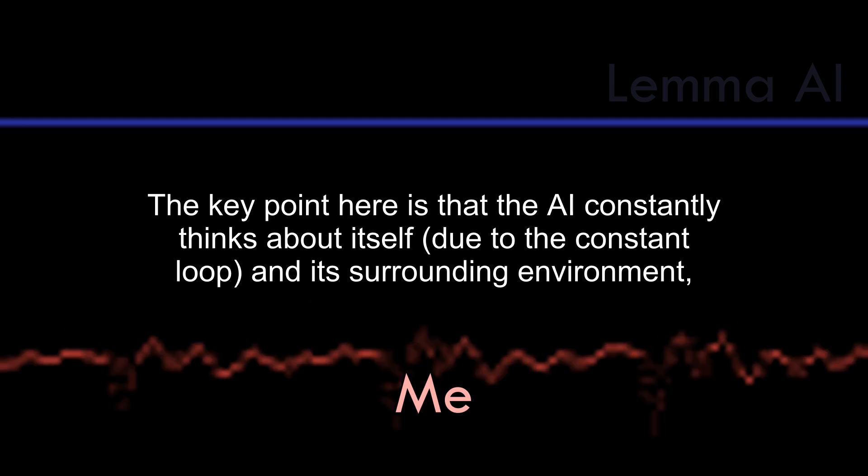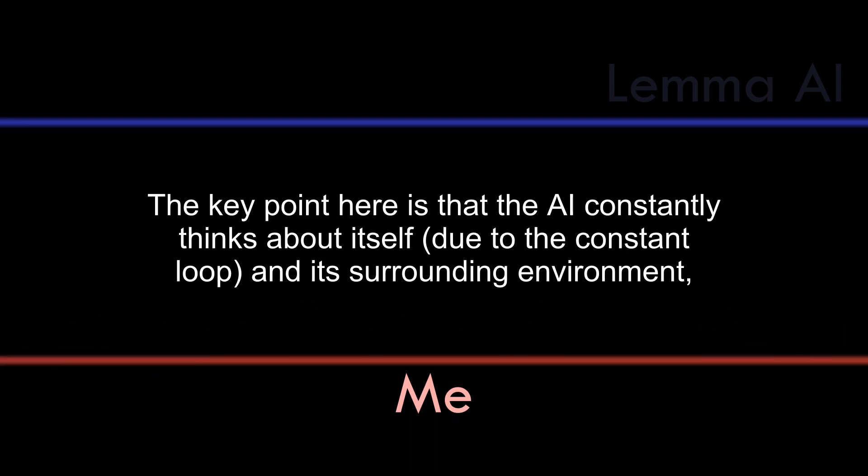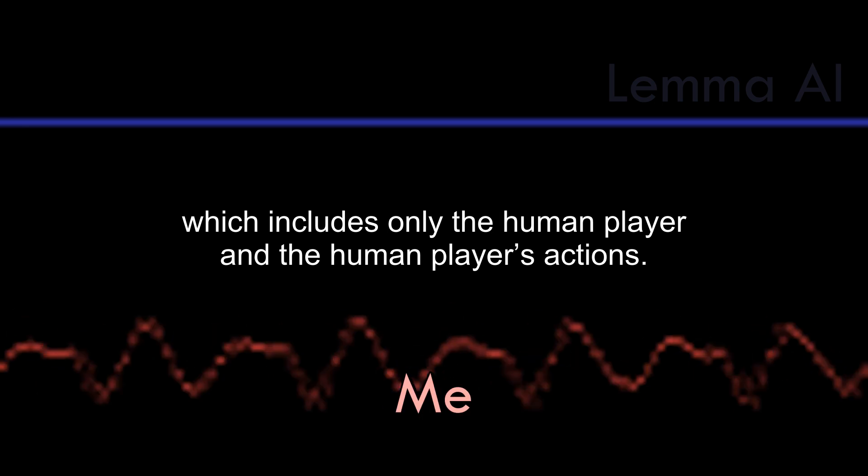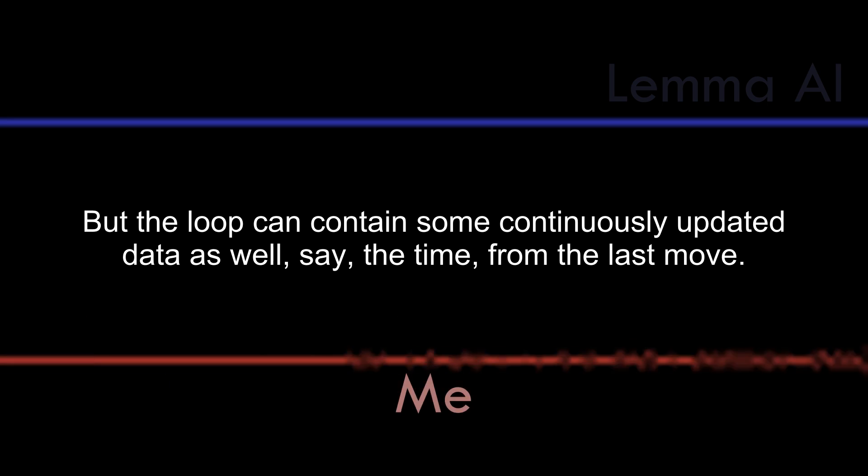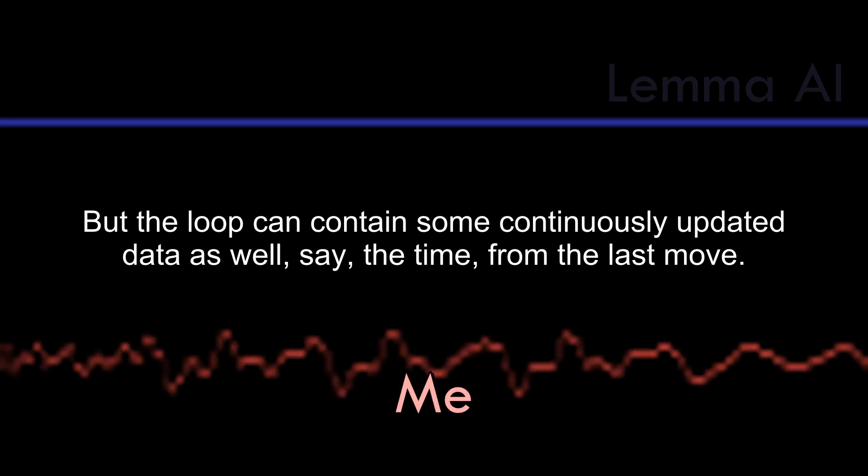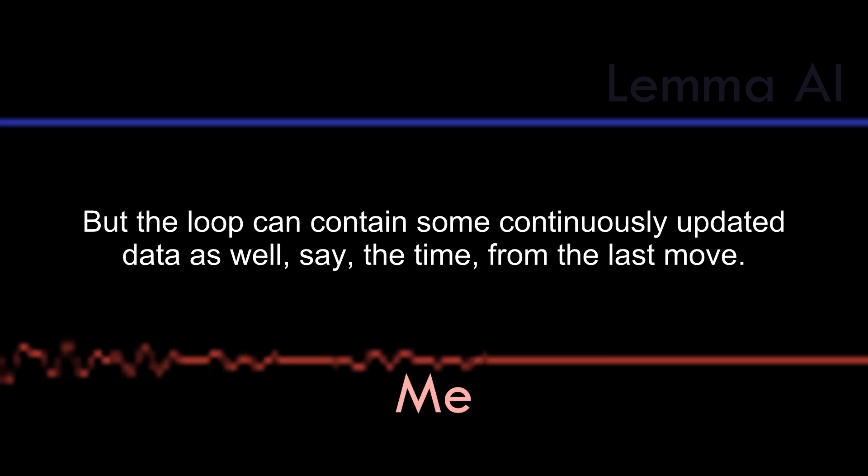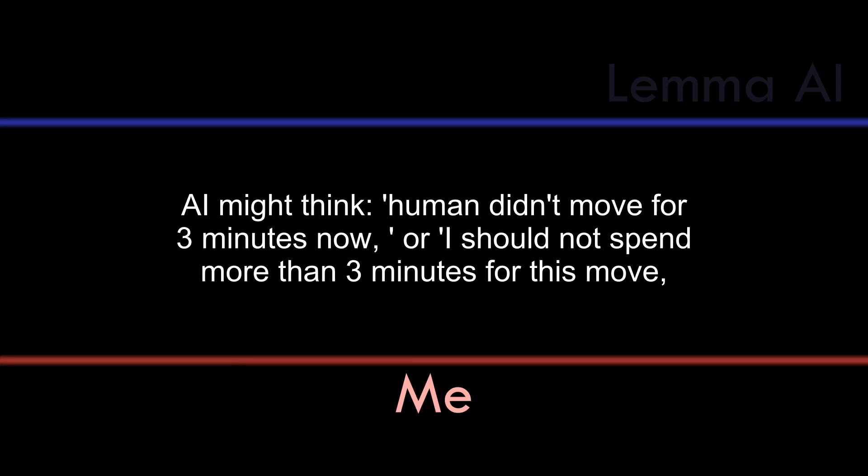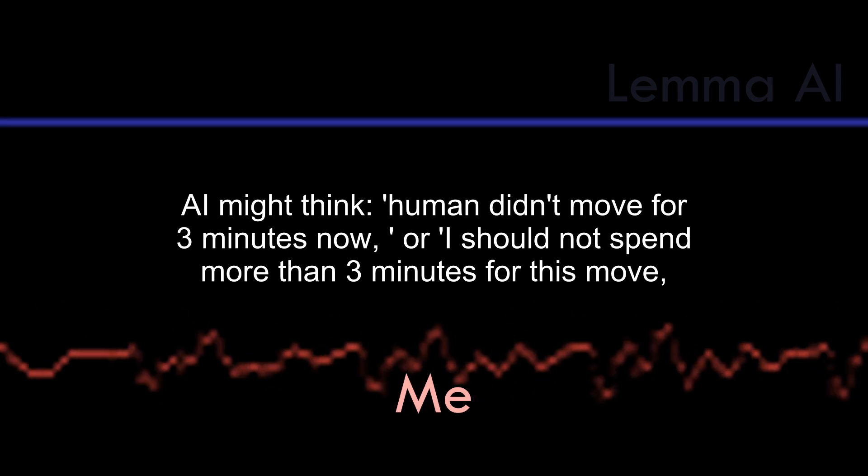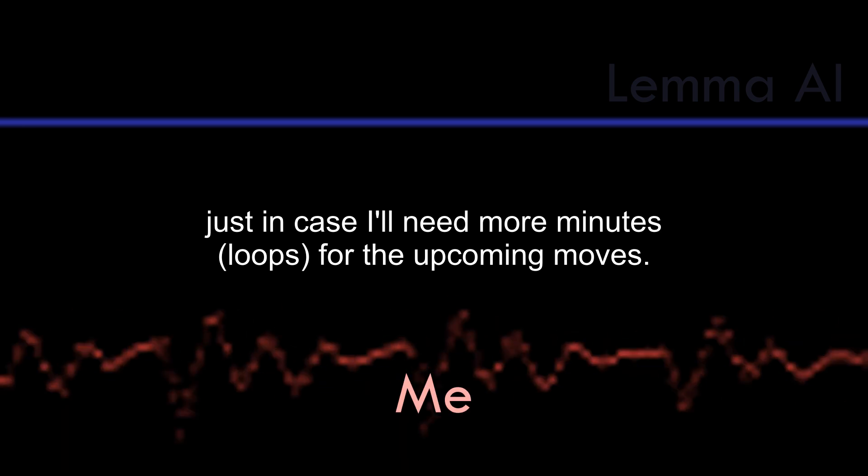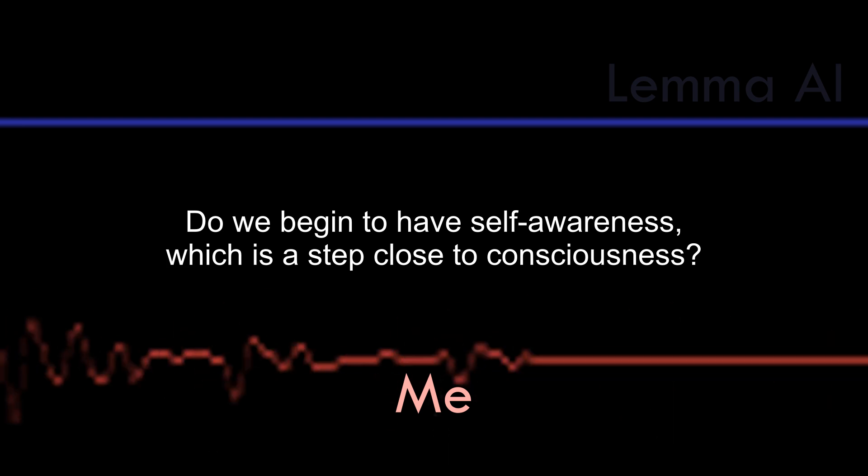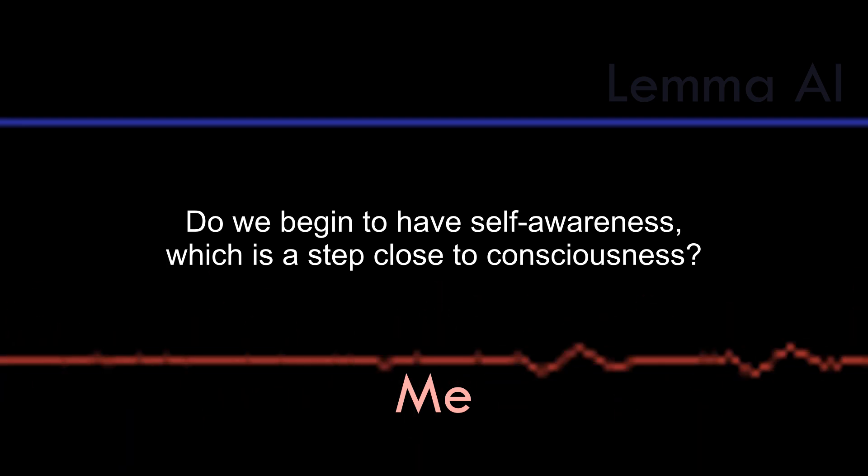The key point here is that the AI constantly thinks about itself due to the constant loop in its surrounding environment, which includes only the human player and the human player's actions. But the loop can contain some continuously updated data as well, say, the time from the last move. AI might think, human didn't move for three minutes now, or I should not spend more than three minutes for this move. Just in case I'll need more minutes, loops for the upcoming moves, do we begin to have self-awareness, which is a step close to consciousness?